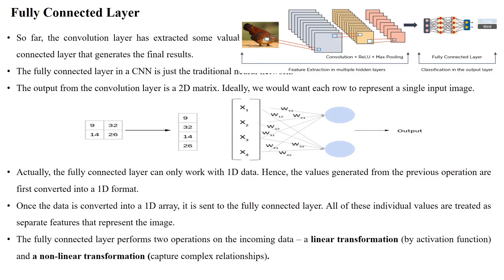Hello everyone. In previous videos we have discussed how an input image is transformed into a vector input and then into the convolution layer. The convolutional layer performs the convolution process to extract information, then uses a ReLU activation function for computing the values in each and every neuron.